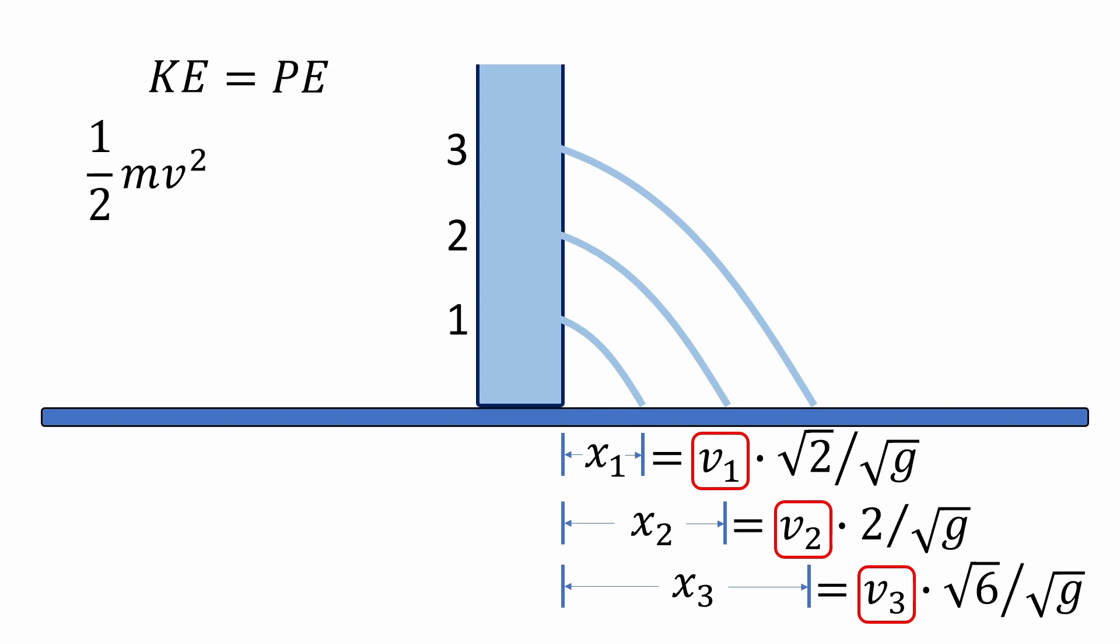That potential energy is equal to mgh, where m is the mass of the water, g is again the acceleration due to gravity, and h is the height of the column of water above the hole. Notice that the m's conveniently cancel out, leaving us with 1/2 v squared equals gh. Multiplying both sides by 2, we get v squared equals 2gh. And finally, taking the square root of both sides, we end up with v equals the square root of 2gh.